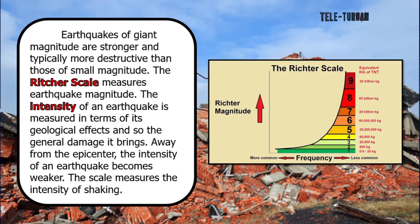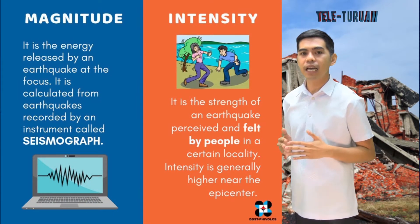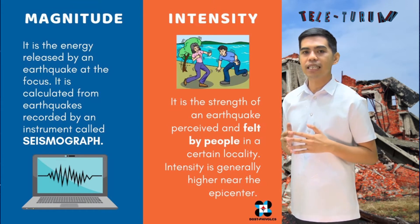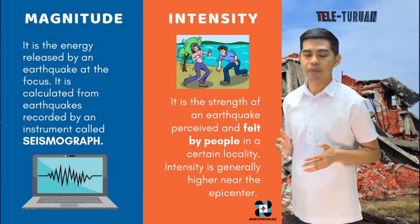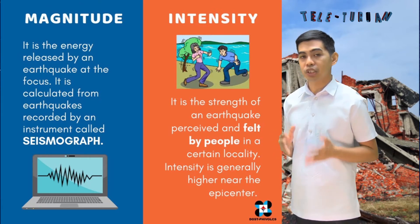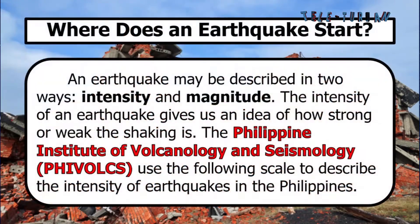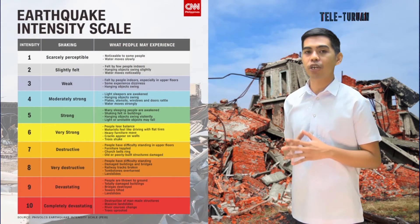The intensity of an earthquake is measured in terms of its geological effects and the general damage it brings. Away from the epicenter, the intensity of an earthquake becomes weaker. Magnitude can be defined as the energy released by an earthquake at the focus, calculated from earthquakes recorded by an instrument called a seismograph. Intensity is the strength of an earthquake perceived and felt by people in a certain locality; intensity is generally higher near the epicenter. The Philippine Institute of Volcanology and Seismology used the following scale to describe the intensity of earthquakes in the Philippines.